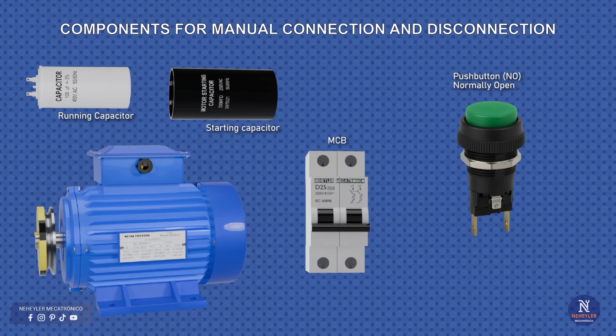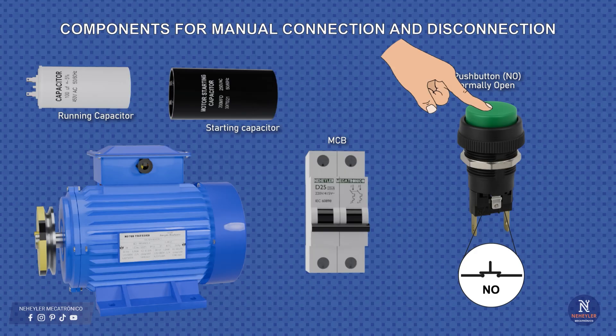Now let's go with the diagram for the manual connection and disconnection of the start capacitor. In this case, in addition to the run and start capacitors, we are going to use two elements, a circuit breaker, which will be the main switch and protection, and most importantly, a normally open push button. This type of push button works in the following way. When pressed it allows current to pass, and when released, the current stops.